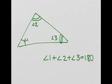So basically, if you have any triangle, angle 1 plus angle 2 plus angle 3 is equal to 180 degrees.